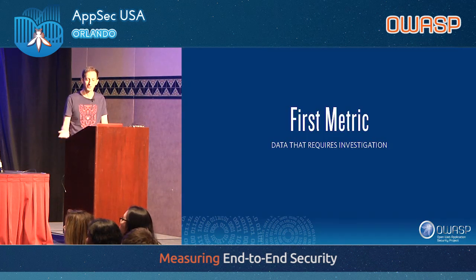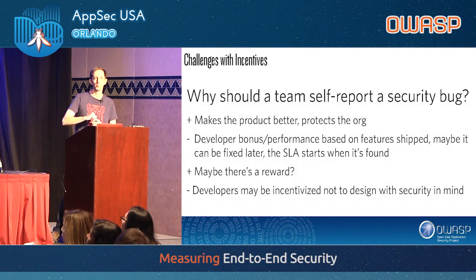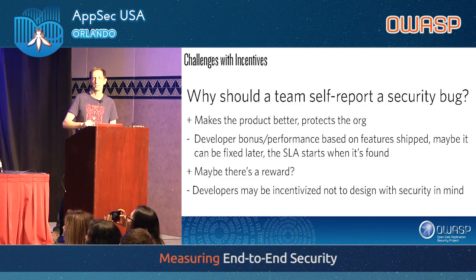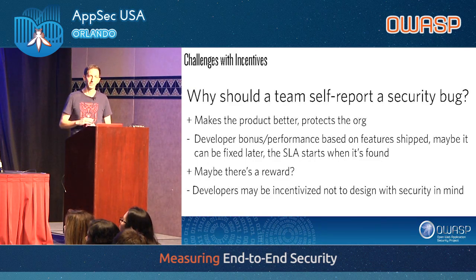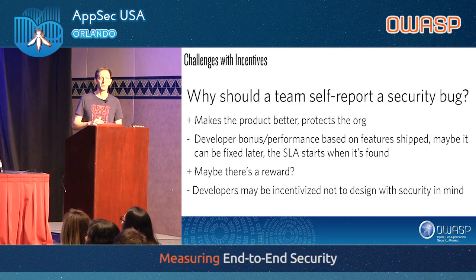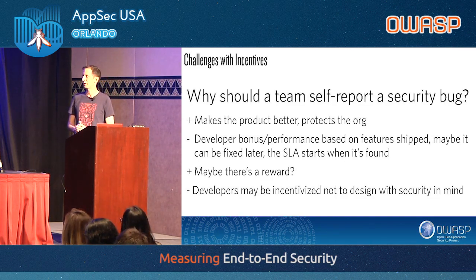Our first metric concept addresses why a team should self-report a security bug. We have 50 teams working on features — their incentive is performance based on features shipped, not security. Maybe there's a reward — give developers a small reward for every security vulnerability they report. But as professional gamers of the system, we see immediate problems: developers would stop speaking up in threat modeling, wait until the product is done, then start discussing issues to collect the reward.